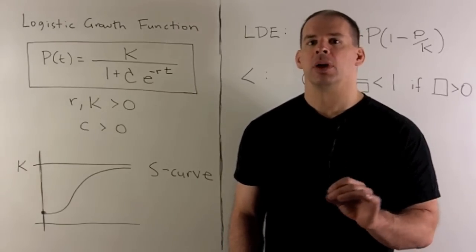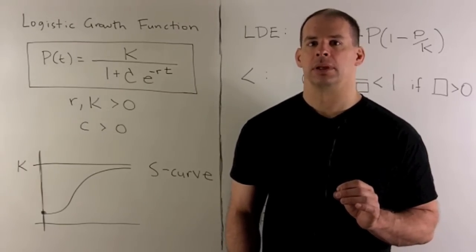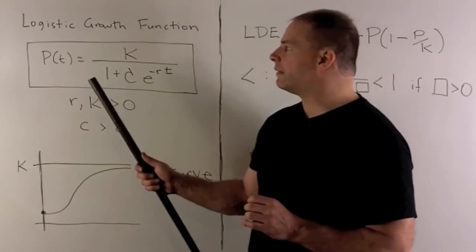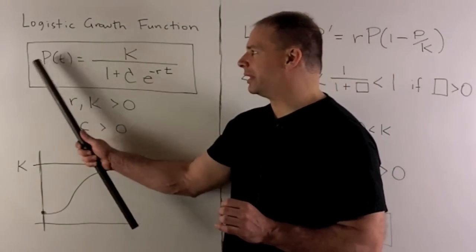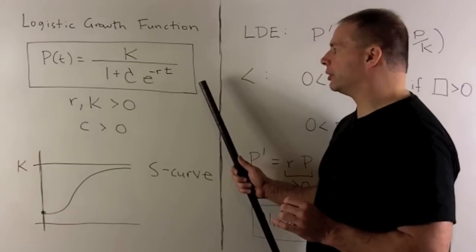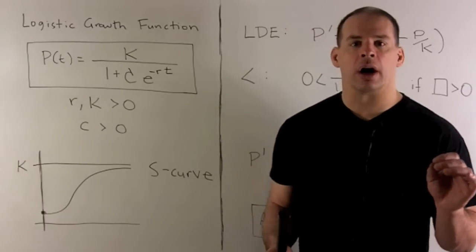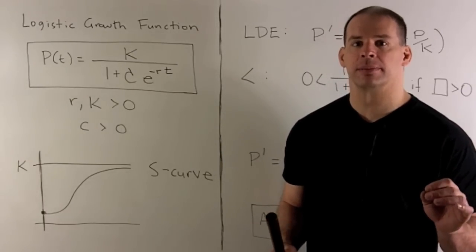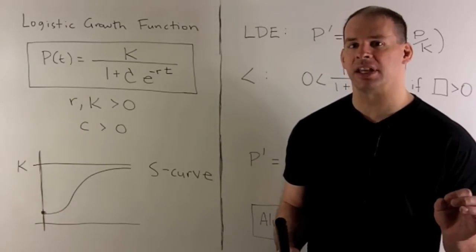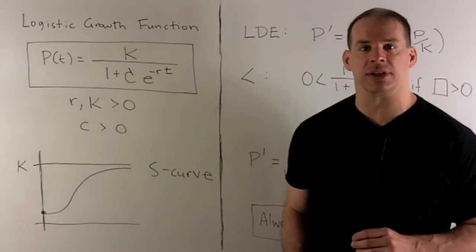Here we're going to graph the function. Our function gives a population at time t by a specific expression. R and K are positive constants, K is our carrying capacity, and C is going to be another positive constant.